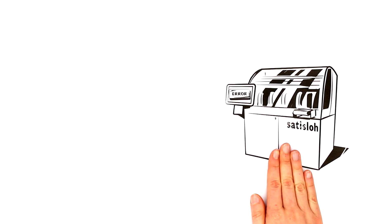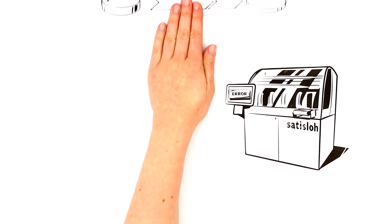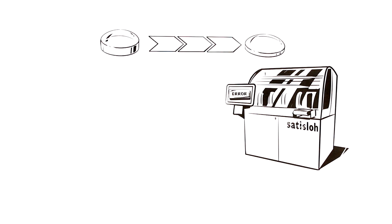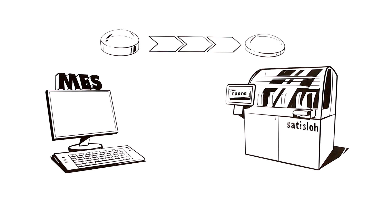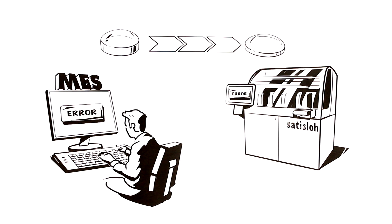If a machine error occurs, for example, in the production chain for an optical lens, an error message is displayed via MES. The responsible employees are notified via email or text message and can quickly eliminate the error and thus control the production process.